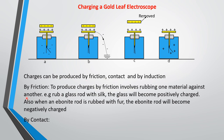Charges can be produced by friction, contact, and by induction. To produce charges by friction, you rub the materials together. To produce positive charge, rub a glass rod with silk. For negative charge, rub an ebonite rod with fur — the ebonite rod will become negatively charged.